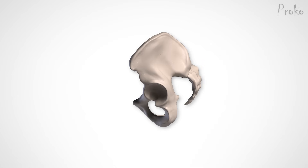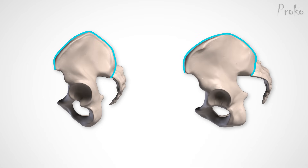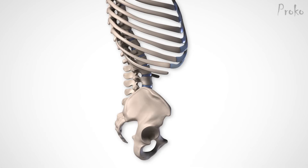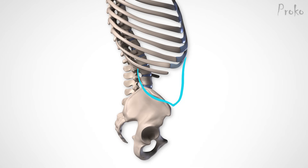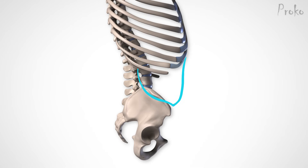From the side view, the crest creates a half circle arc. This arc shape will vary from a smooth curve in some people to a sharp corner at the top point in other people. This high point is somewhat back from center. Men tend to have a more angular high corner, while women have a smoother curve. Only the front quarter of the crest is actually visible on the surface, starting from the tubercle. The rest is covered by the external oblique muscle on the sides.